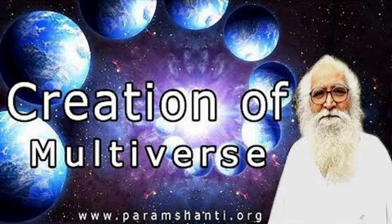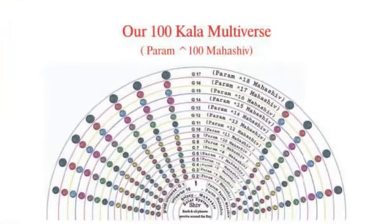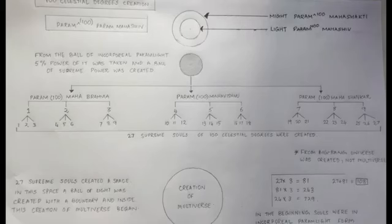Viewers, please note. As we progress to the higher dimensions, the power of the kala in the creator of that creation increases. Now our multiverse, when it was created, had 100 kala and that's why it is called 100 kalaka brahant and the creator of our multiverse is called param raised to 100 mahashif.